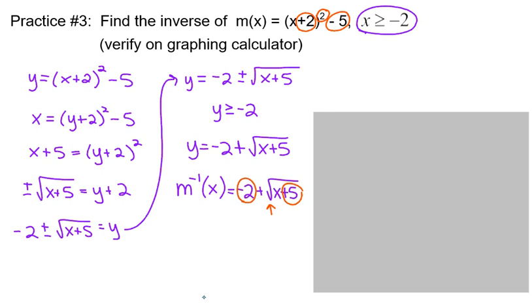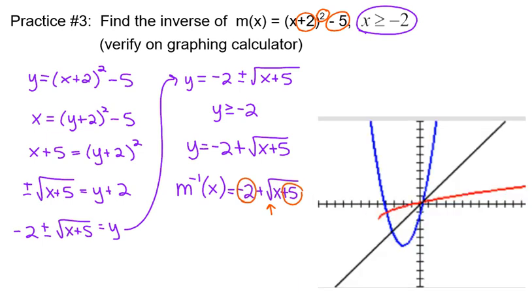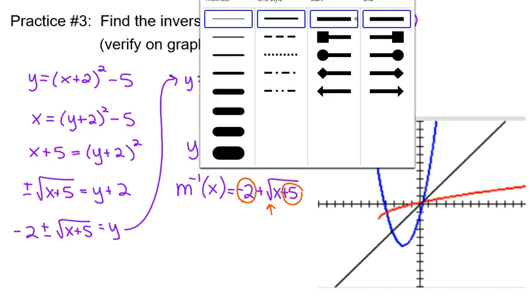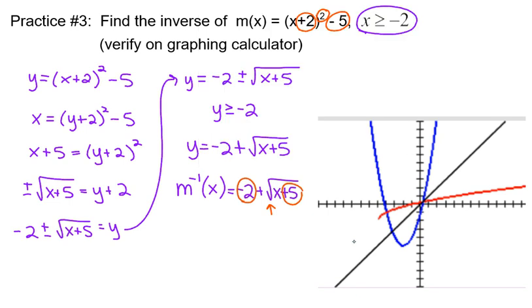Verify on graphing calculator. When I graphed the original parabola m of x on the graphing calculator, it didn't restrict the domain for me, so I got the whole parabola. So I'm just going to erase part of it. We want only the part where x is greater than or equal to negative 2, so we don't want this over here. So that is gone.